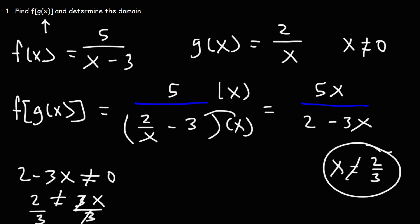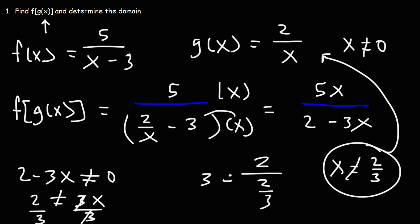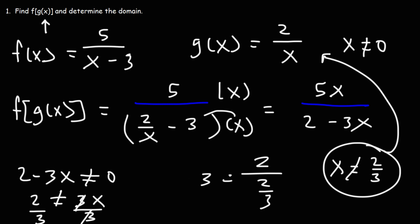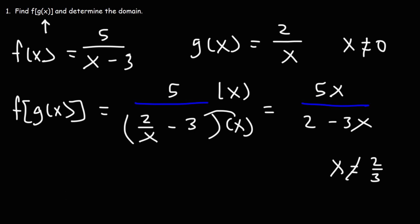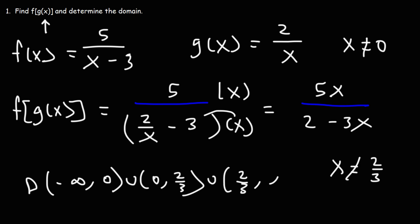If we plug 2 over 3 into g, we get 2 over (2/3), which gives us 3 — and that invalidates f because x can't be 3 for f. In interval notation, the domain is negative infinity to 0, union 0 to 2 over 3, union 2 over 3 to infinity.